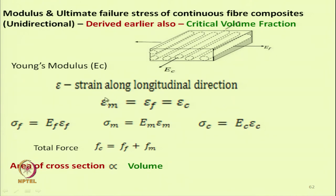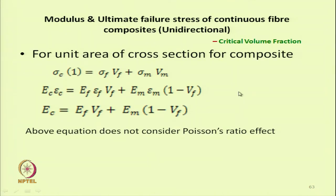Epsilon M is the strain of matrix, epsilon F is the strain in fibre, and epsilon C is the strain in composite. Stress can be measured by multiplying the modulus with the strain. Total force is the addition of the force on fibre and force on matrix. If we know the volume fraction of fibre, we can calculate the stress and the modulus of the composite.